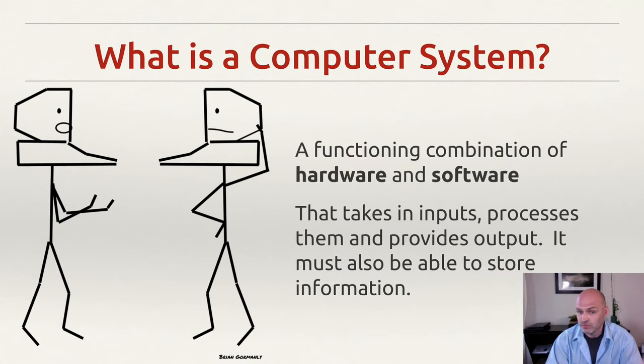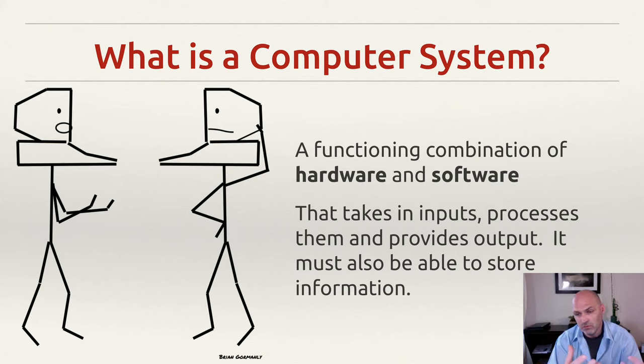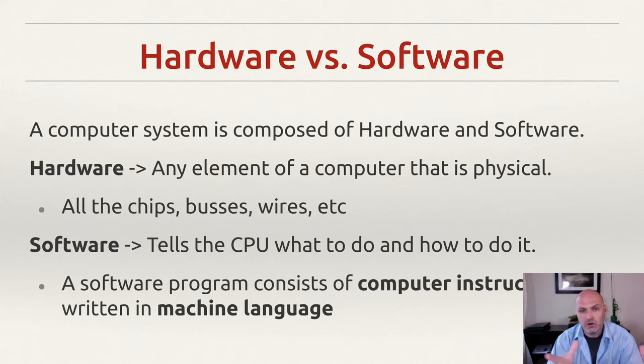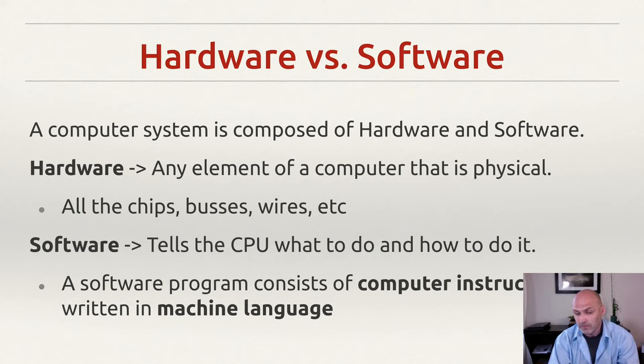Any computing system is made up of both hardware and software. Specifically, the computing system is the functioning combination of these two things — that's what enables it to perform processing on the input and provide the output. A really easy way to visualize it is that hardware is any element of the computer that is physical. I can touch the screen, I can touch the keyboard. Even if I open up the computer, I can physically touch the chips inside — those are pieces of hardware as well.